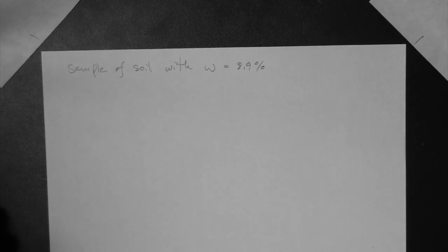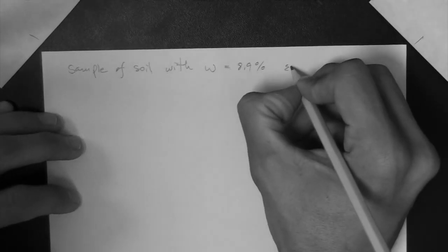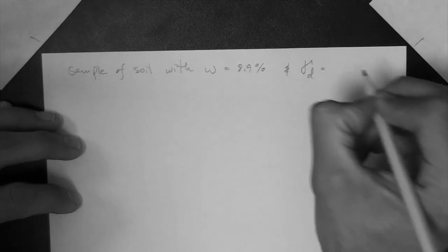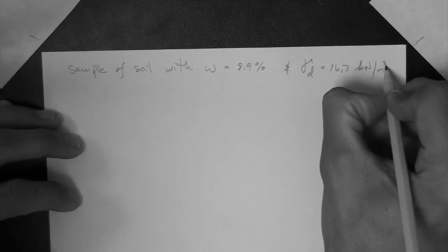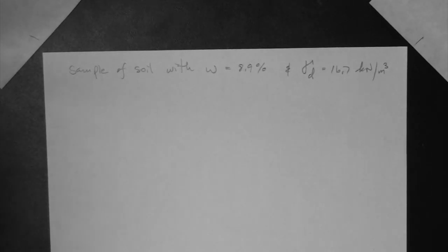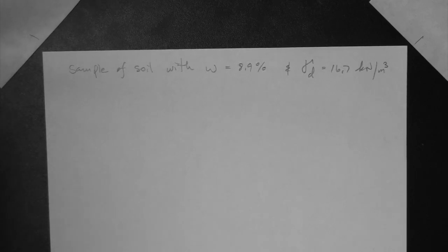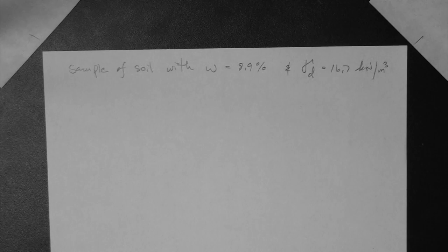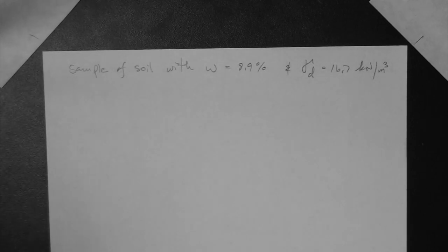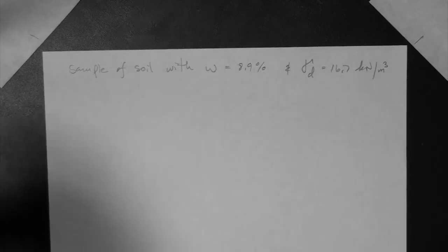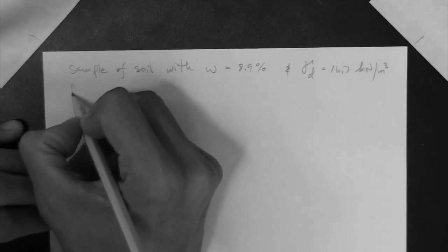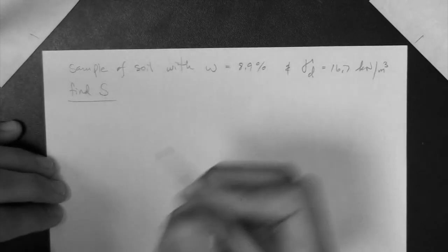We know that we also know that the dry unit weight is 16.7 kN per meter cubed. And what else do we know? Basically, that's it. So we are given a soil with a water content of 8.9% and a dry unit weight of 16.7 kN per meter cubed, and we need to find the degree of saturation.